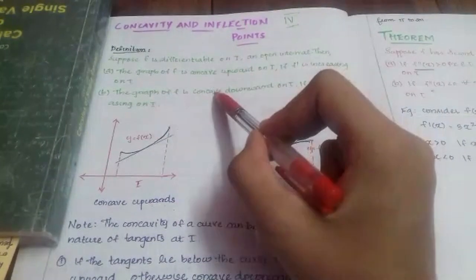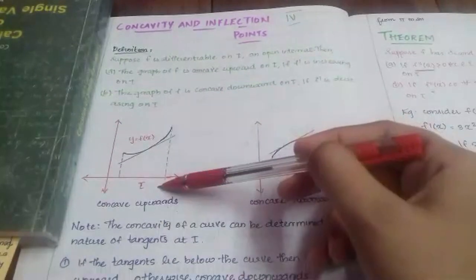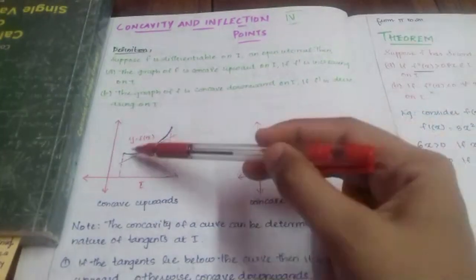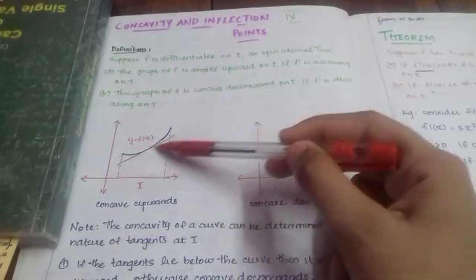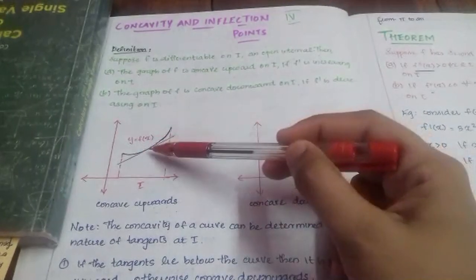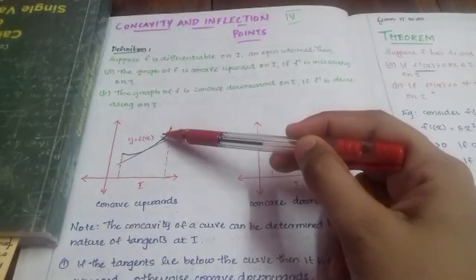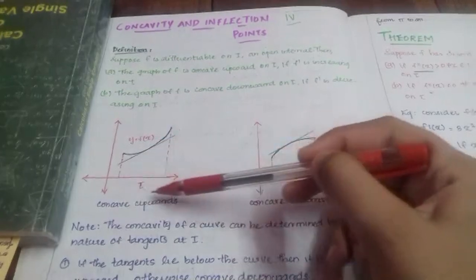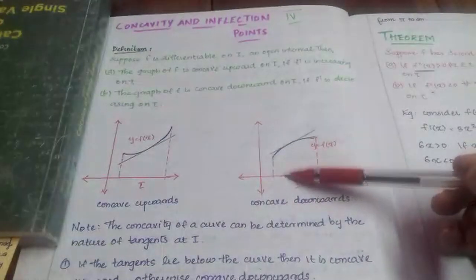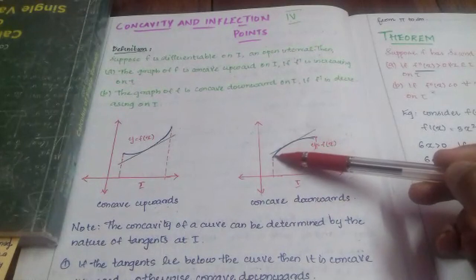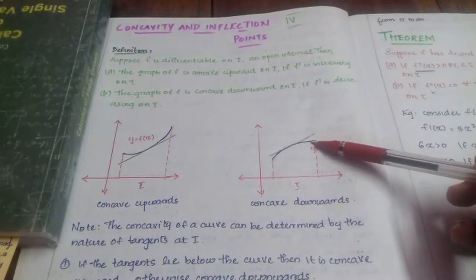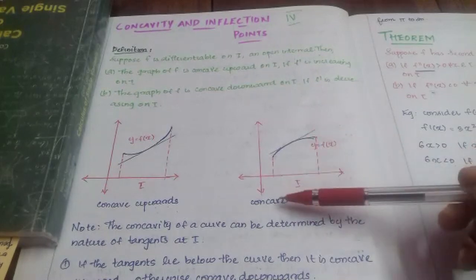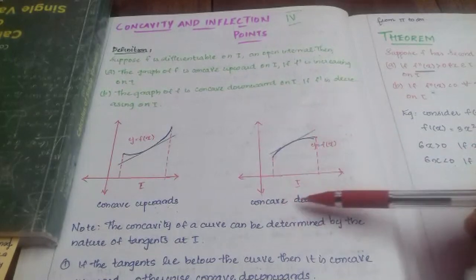We will describe the graph. Let us consider this graph — this graph is a curve. If we have any concave on this curve, then the tangent lies below the curve, so it will be concave upward. Looking at the other graph, if the tangent lies above the curve, it will be concave downward.